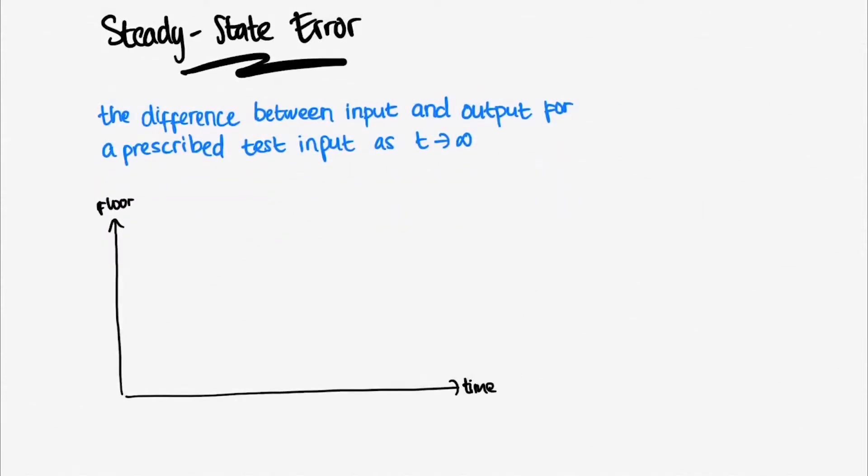Back to our elevator case. The steady-state error is the difference between our desired floor and the value when the response reaches the plateau.